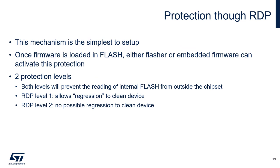Protection through RDP. This mechanism is very simple to set up. Once firmware is loaded in flash, this protection can be activated either from the programmer or from the embedded firmware itself. There are two protection levels. Both levels will prevent the reading of internal flash from outside the chipset. RDP level 1 allows regression to a clean device, while RDP level 2 allows no more regression.